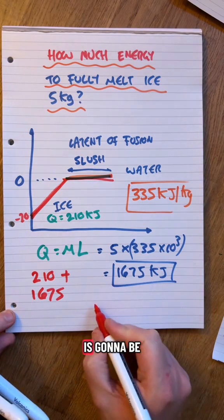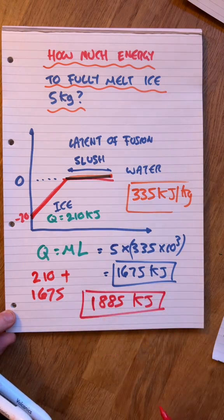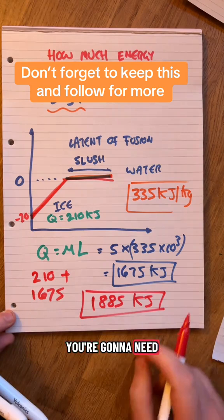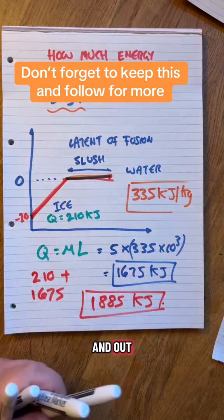Thank you very much. The total amount of energy is going to be 1885 kilojoules. So if you've got five kilograms of ice at minus 20, you're going to need that amount of energy to fully melt it into water. Cool stuff, over and out.